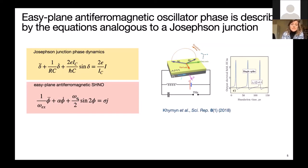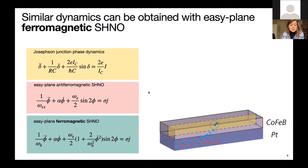But the problem is that today it is still quite challenging to realize anti-ferromagnetic devices, because in particular it is quite hard to grow anti-ferromagnets with sufficiently large domains to realize oscillators. And this has motivated us to show that similar dynamics can be obtained with easy plane ferromagnetic spin hole nano-oscillators, which are much more easy to fabricate experimentally.